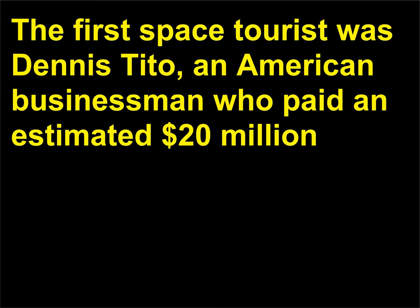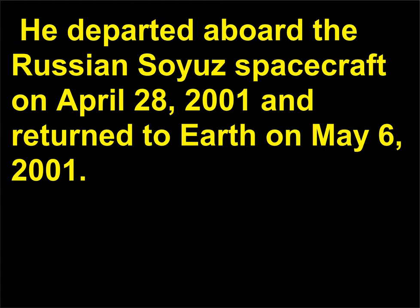The first space tourist was Dennis Tito, an American businessman who paid an estimated 20 million dollars to travel to space with a Russian crew and spend time on the International Space Station. He departed aboard the Russian Soyuz spacecraft on April 28, 2001, and returned to Earth on May 6, 2001.